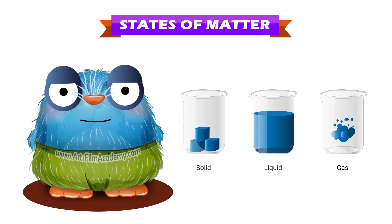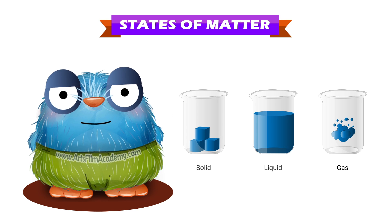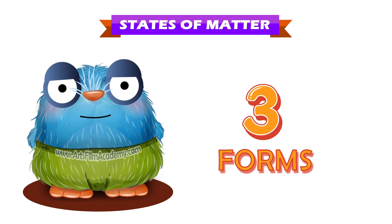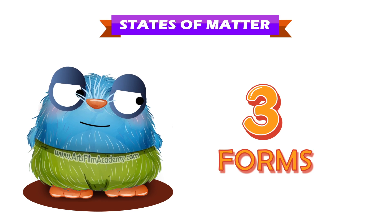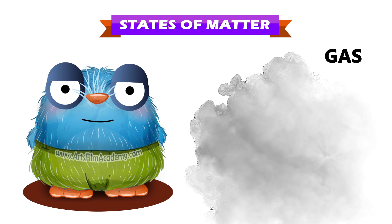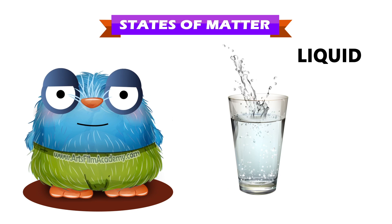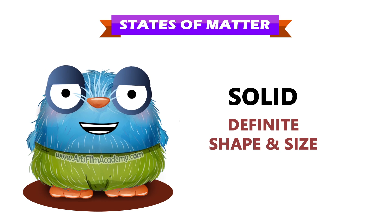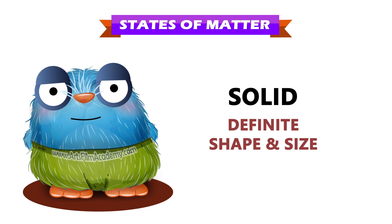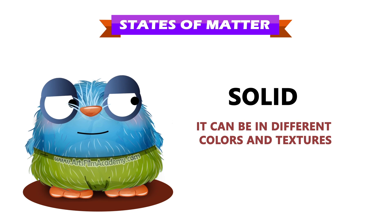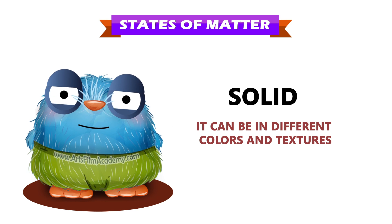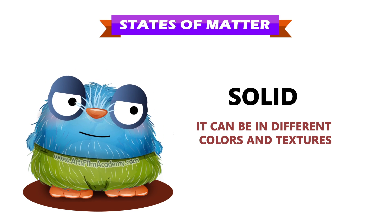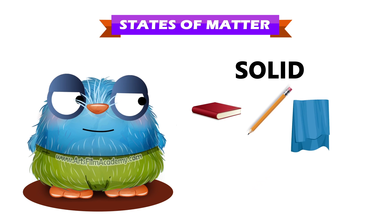Let's study about states of matter. Matter exists in three different forms: solid, liquid, and gas. Solids have a definite shape and size. They can be in different colors and textures. Examples are book, pencil, cloth, table, and car.